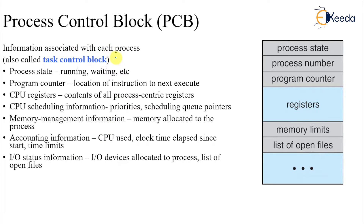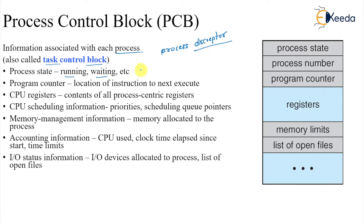In more detail, the process control block holds information associated with each process. It is also called a task control block or process descriptor. It contains the process state — whether it is running, waiting, or suspended — and the program counter.